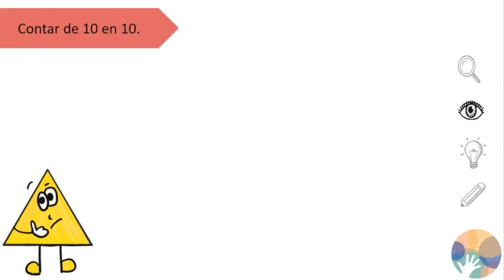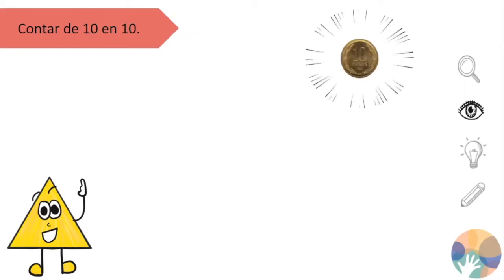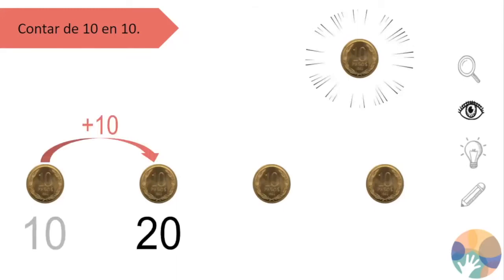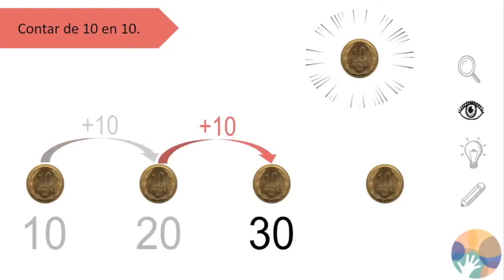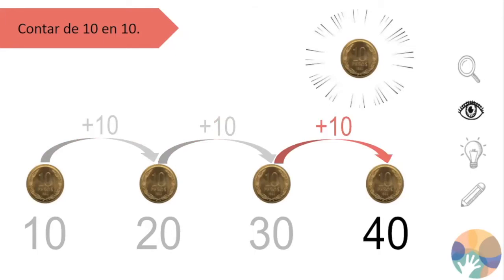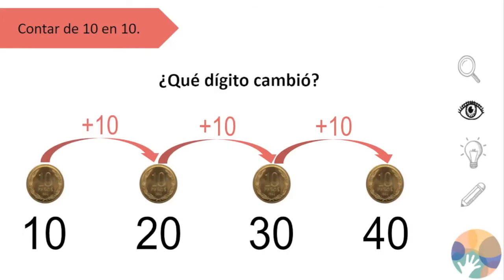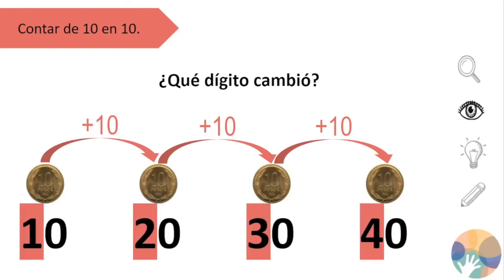¿Con qué monedas podemos relacionar el conteo de 10 en 10? Con la moneda de 10 pesos. Contemos de 10 en 10 con las monedas que tenemos: partimos con 10 pesos, le agregamos 10 y nos quedan 20 pesos; seguimos con 20, le agregamos 10 más y obtenemos 30 pesos; seguimos con 30, le agregamos 10 pesos más y finalmente obtenemos 40 pesos. Mientras contábamos de 10 en 10, ¿qué dígito cambió? El dígito que se ubica en las decenas.